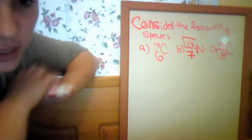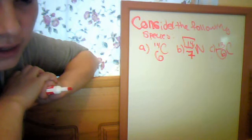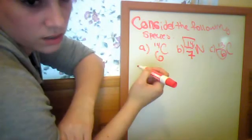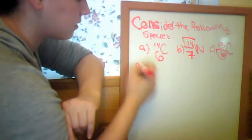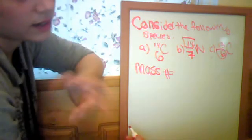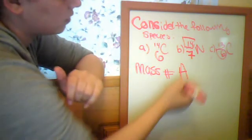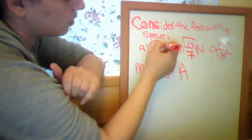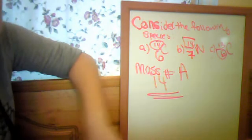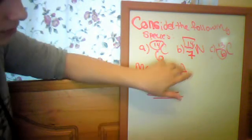The last one says, what is the mass number of species A? Mass number. Mass number, so the highest number of A. What's that? That's the mass number, it's 14. It's not six, why? Because it's the lowest number, it's the atomic number.